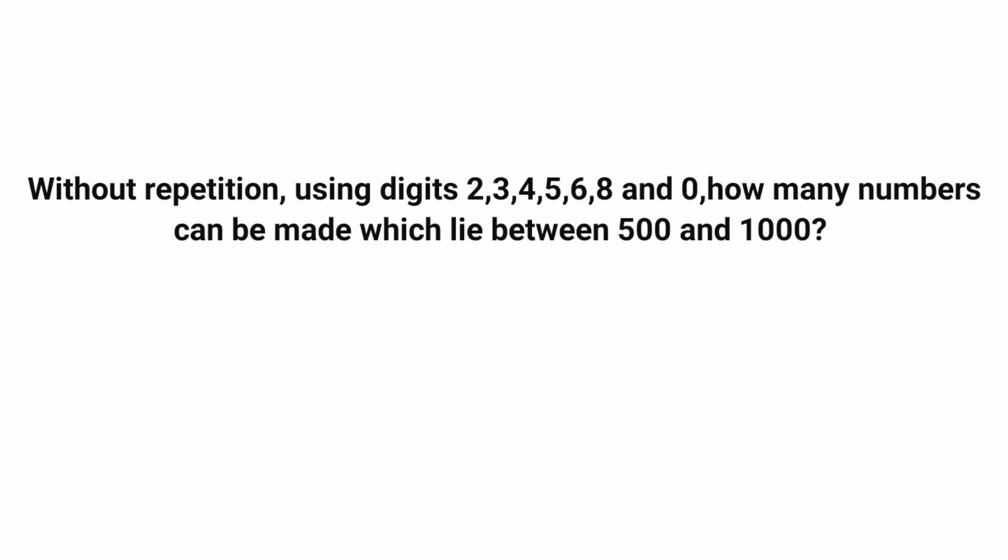See the first question: Without repetition, using digits 2, 3, 4, 5, 6, 8 and 0, how many numbers can be made which lie between 500 and 1000? This question can be solved in two ways: first one is without using the equation, that is using the logic, and the second one is using the equation. I will explain to you both the methods. Let's see the first method. The number should lie between 500 and 1000, so it should be a three-digit number.